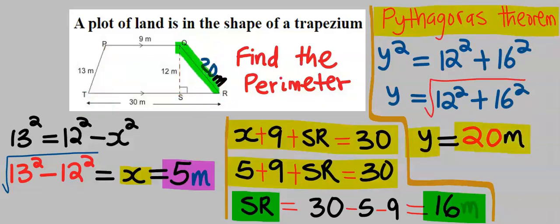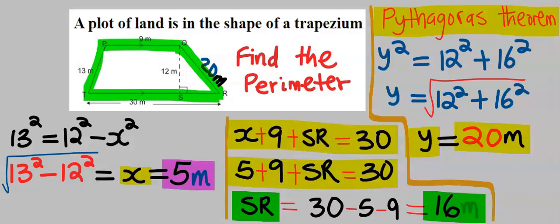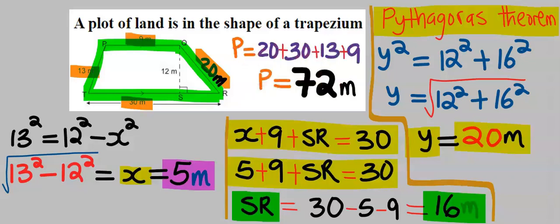Having obtained this length, we can now find the perimeter of the entire trapezium, which is 20 plus 30 plus 13 plus 9. The perimeter of the land is 72 meters.